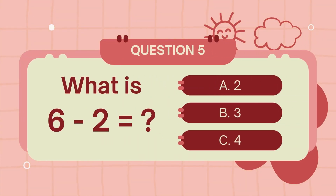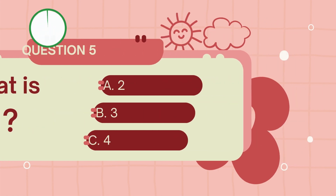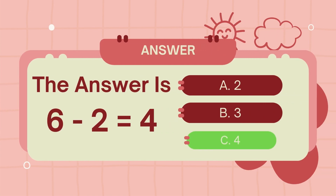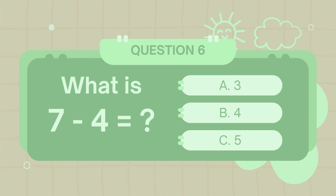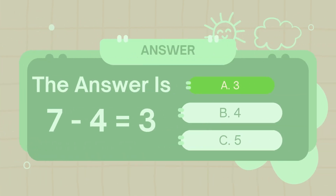What is 6 minus 2? The answer is 4. What is 7 minus 4? The answer is 3.